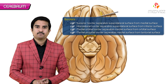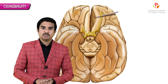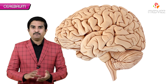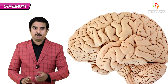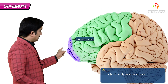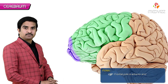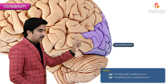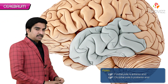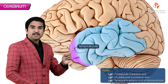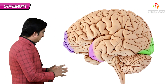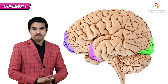The medial occipital border separates the medial surface from the tentorial surface. Regarding poles: the frontal pole is the anterior end, the occipital pole is the posterior end, and the temporal pole is the anterior end of the temporal lobe.